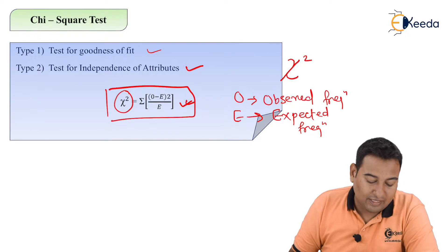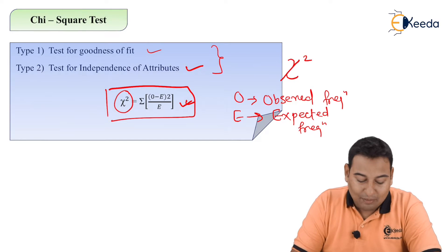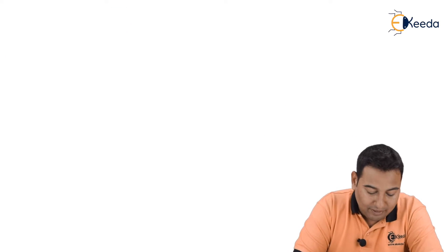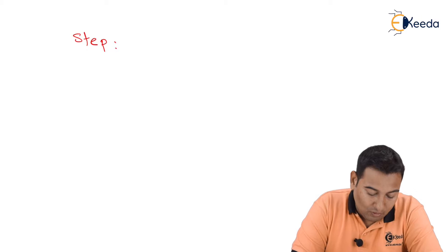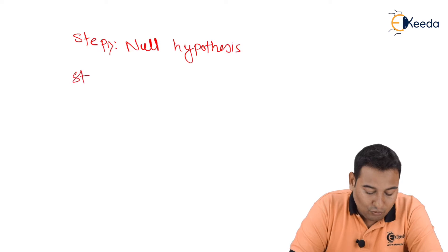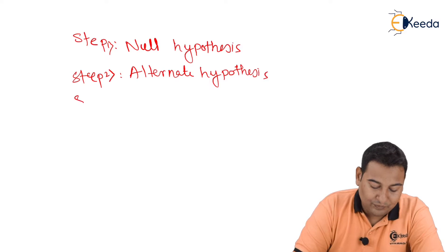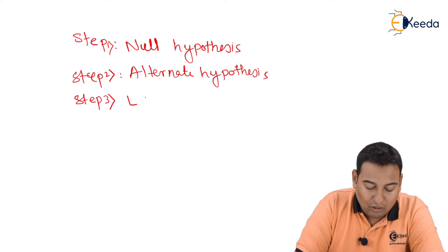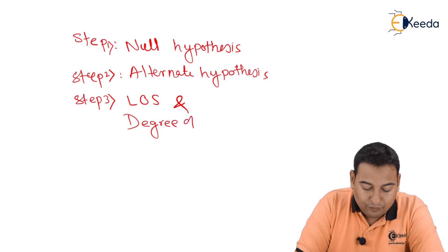This is the formula for both types. Now let's discuss the steps involved, which are exactly similar to sampling. Step number one is your null hypothesis. Step number two is alternate hypothesis. Step three is LOS, which stands for level of significance, and you need degree of freedom. The formula for degree of freedom is n minus one.